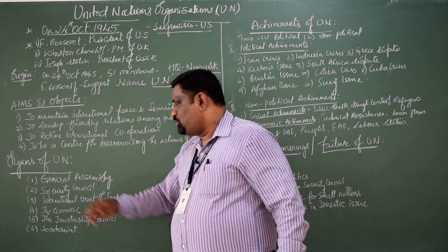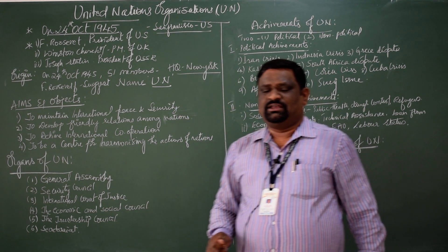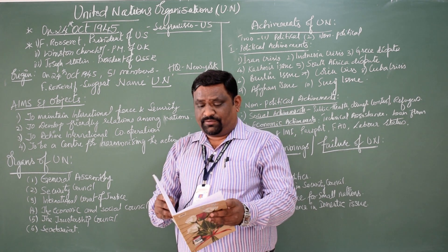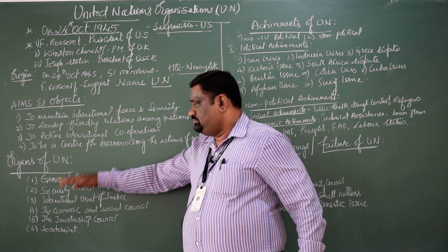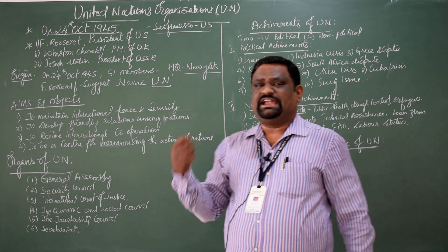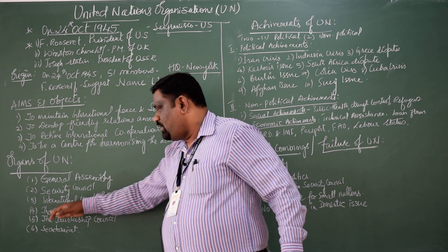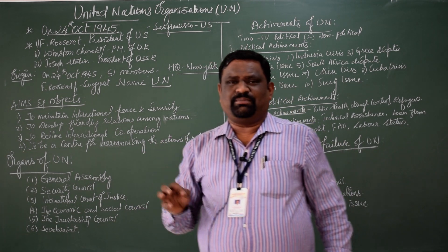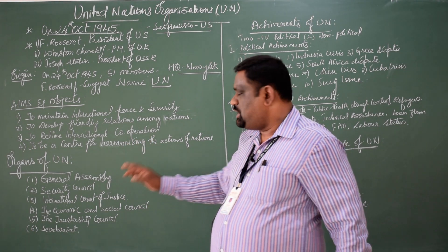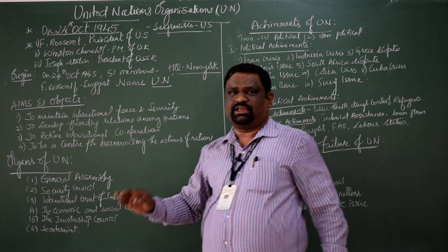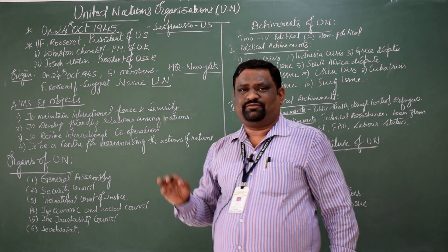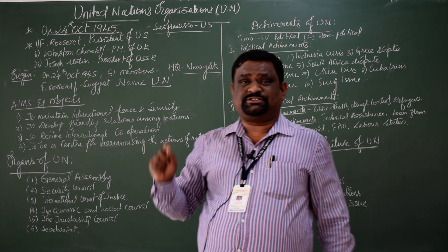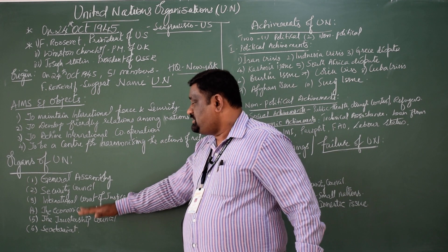Coming to the fourth organ, the Economic and Social Council: there are 54 members, and those 54 members are also elected from the General Assembly. The main aim of this organ is to promote the livelihood and standard of living of every citizen of this world. This is its first and foremost objective.